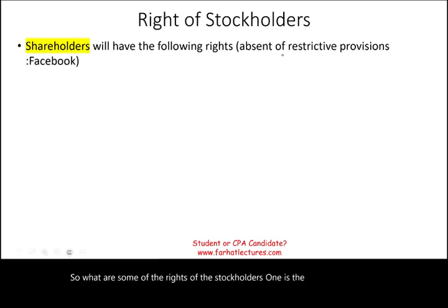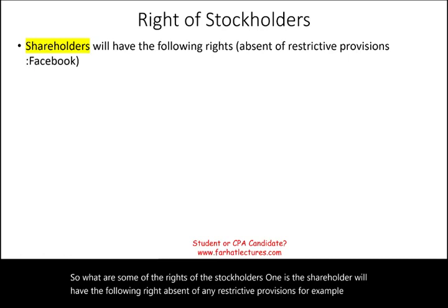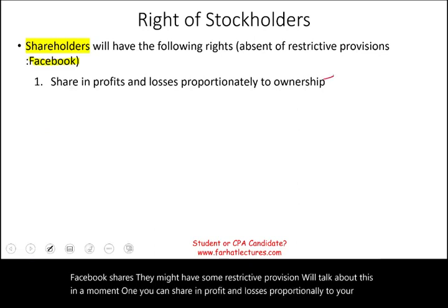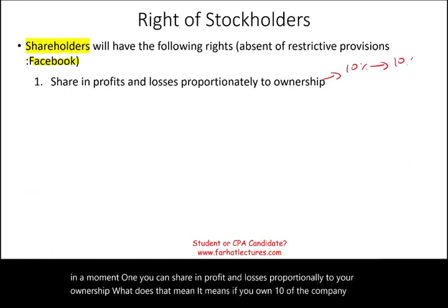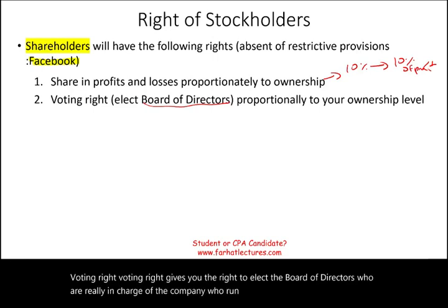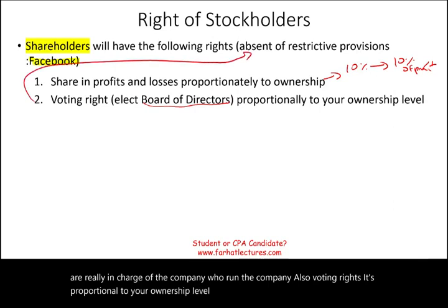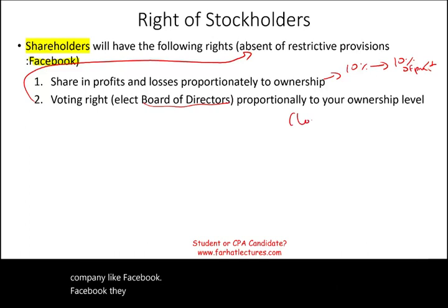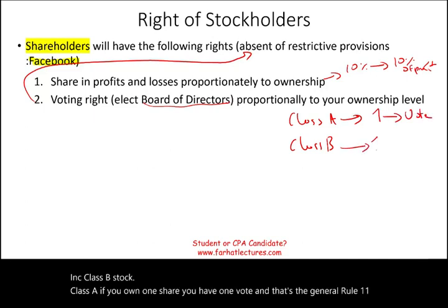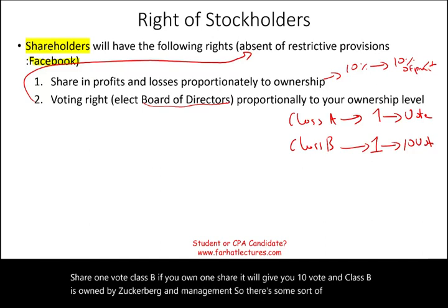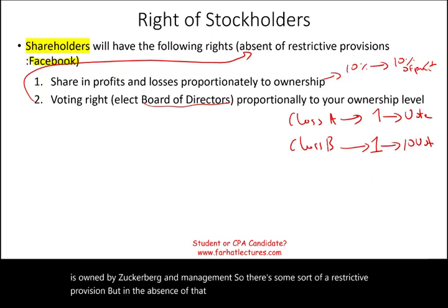A shareholder has the following rights, absent any restrictive provisions. First, you can share in profits and losses proportionally to your ownership — if you own 10% of the company's stock, you get 10% of the profit. Second, voting rights: you have the right to elect the board of directors, who run the company, and voting is also proportional to your ownership level, unless there is some sort of restrictive provision. For example, Facebook has Class A stock — one share, one vote — and Class B stock, where one share gives you 10 votes, and Class B is owned by Zuckerberg and management.